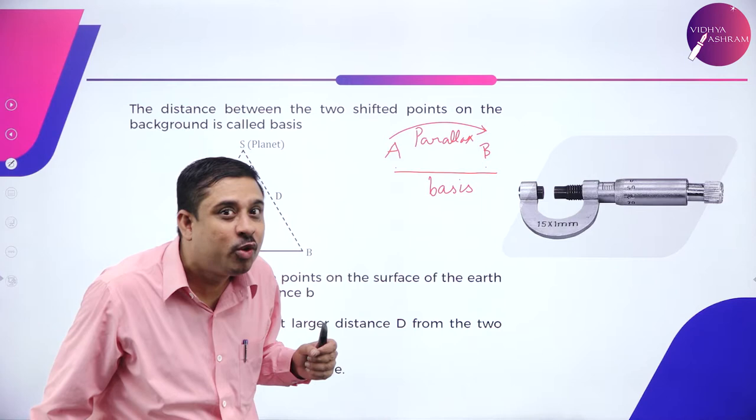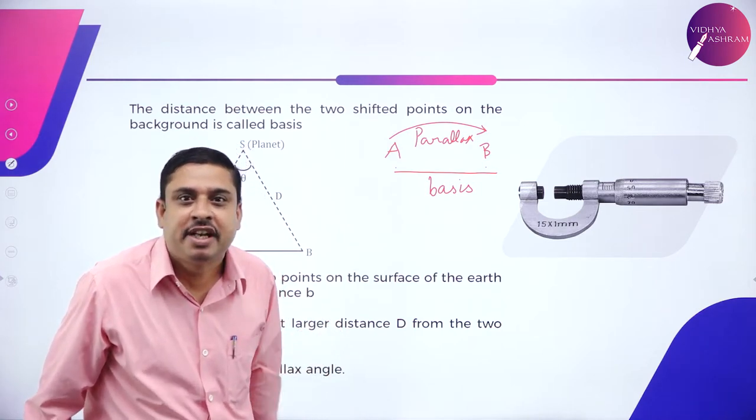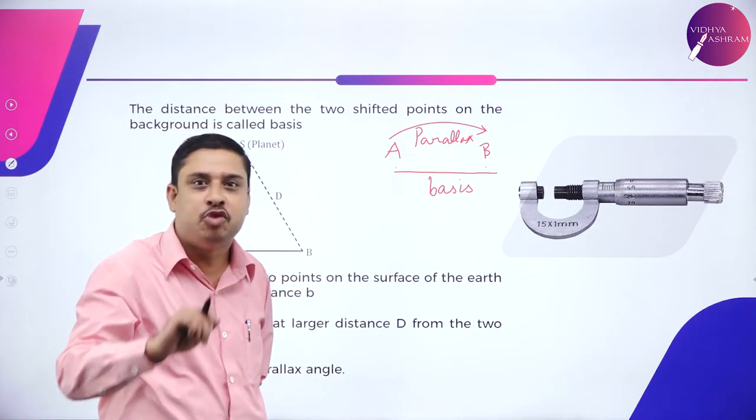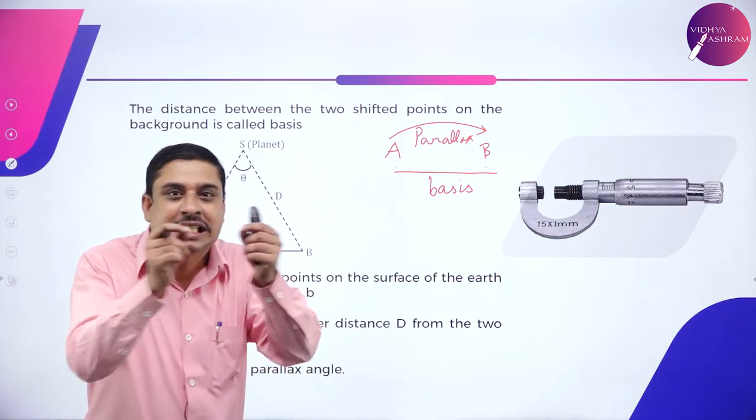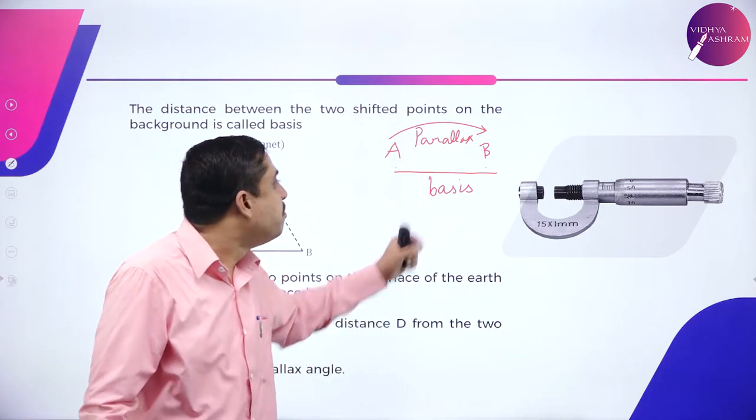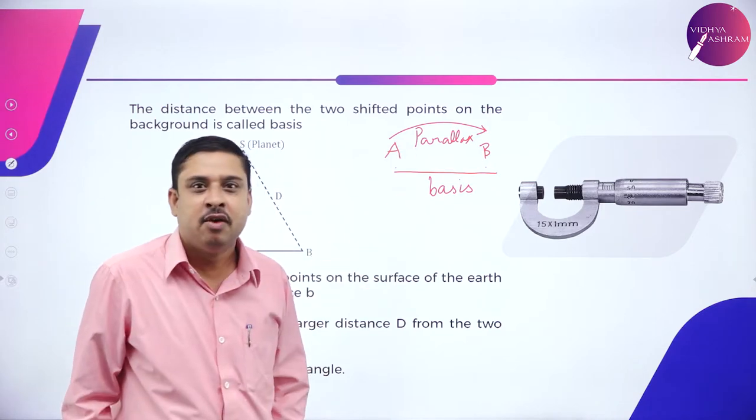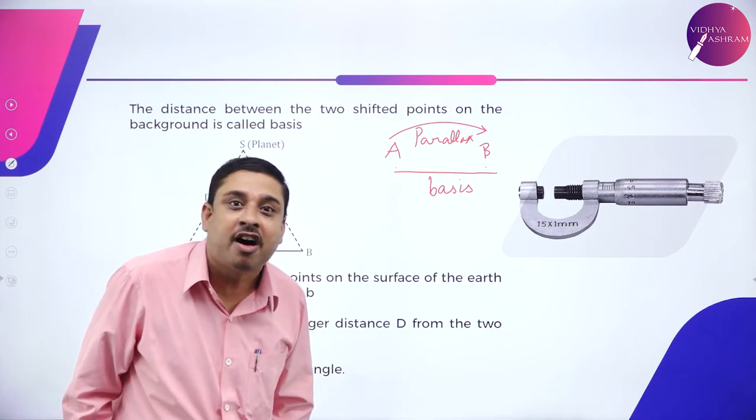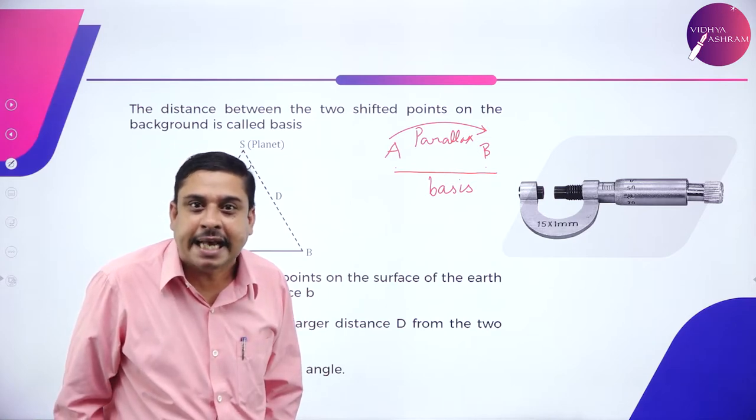What was parallax error due to a position of an object with respect to an object. And what was the distance of shift called as basis? And with respect to this, we calculate something called large distances using parallax method.